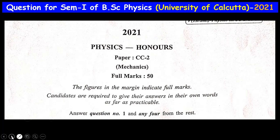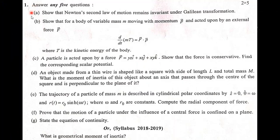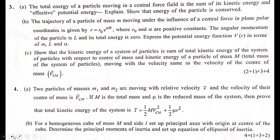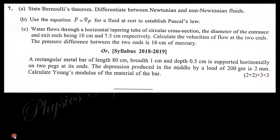First, you can see the total question paper for 2021 Physics Honours CC2, which is Mechanics. There is question number one from (a) to (g), after that questions two through seven — seven questions in total. I request all of you to try to solve these questions yourself before continuing this video to watch the solutions.